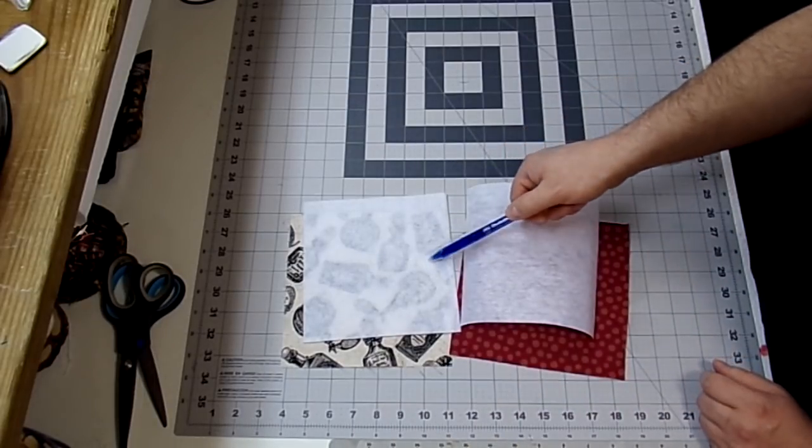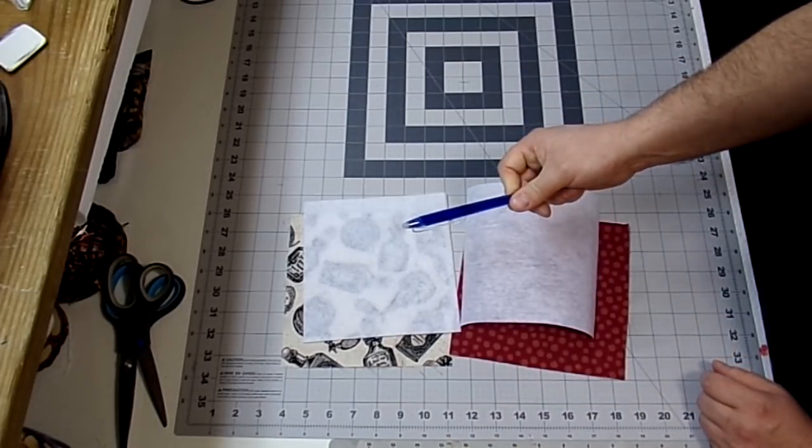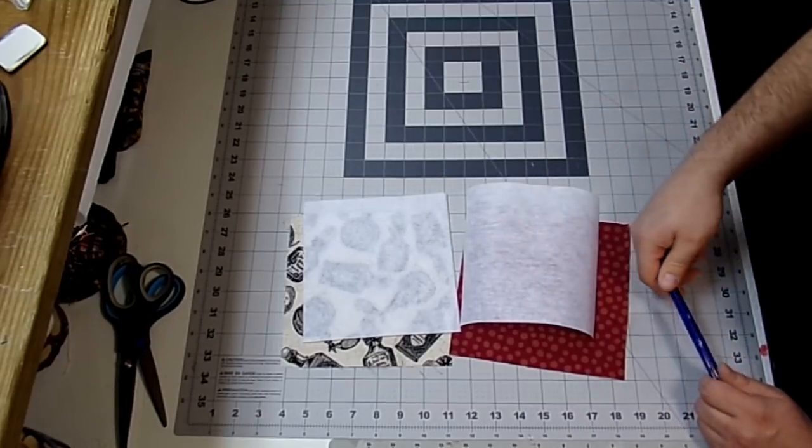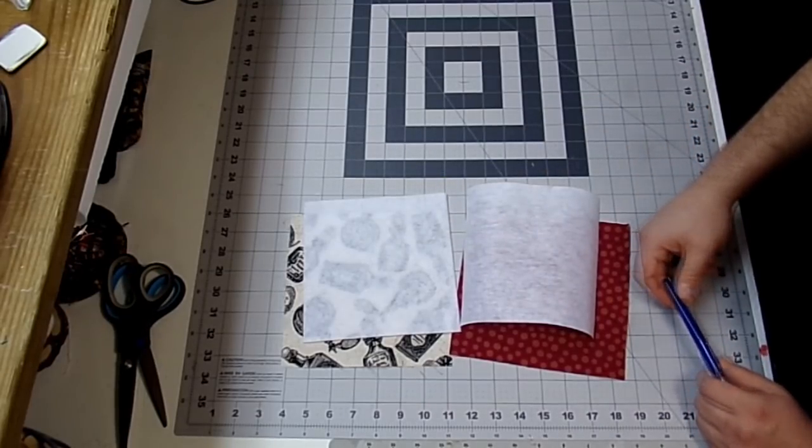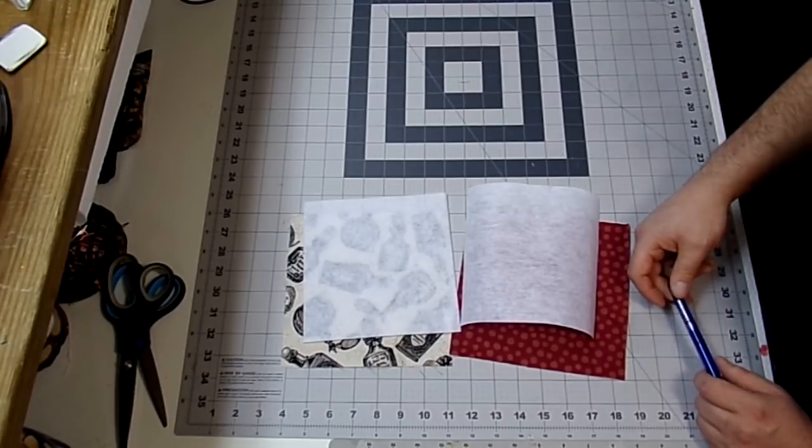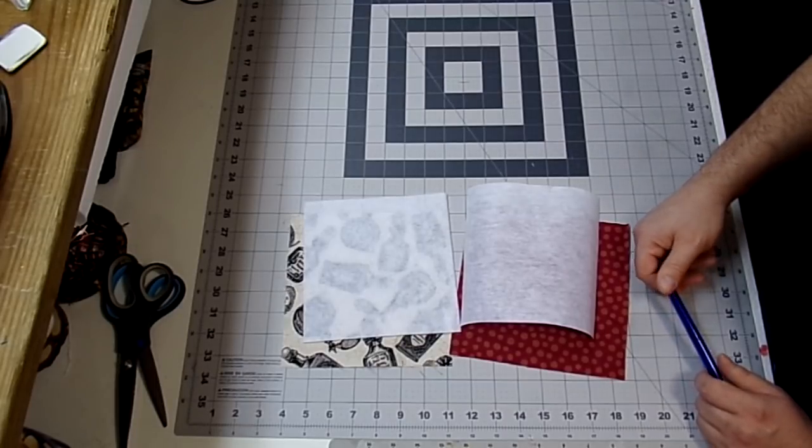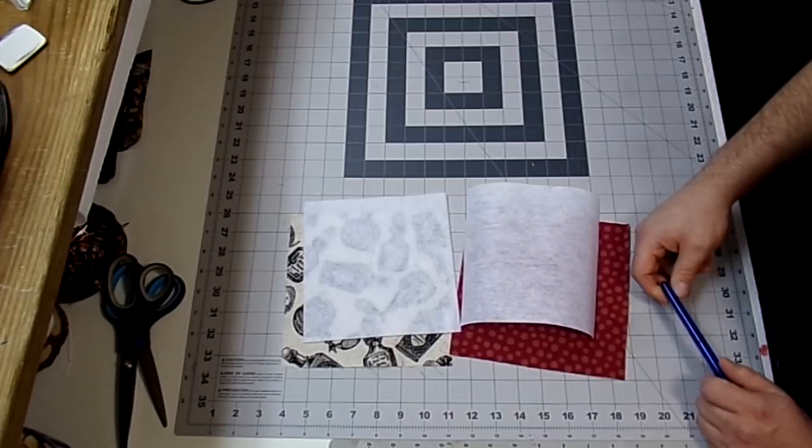You're also going to need something to mark on your fabric. I'll be using this friction pin. You could just use a pencil. I'll also be using pins, clips, and scissors. You'll need your iron with ironing board, and sewing machine with matching thread. Today I'll just be using black, so let's get started.